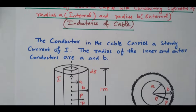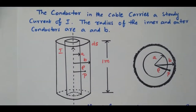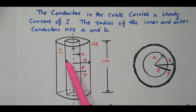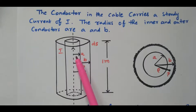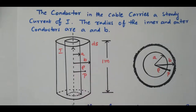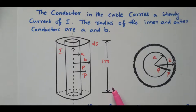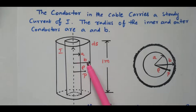Now we refer to the diagram. This is a coaxial cable where the axis is common for both inner and outer conductors. The inner conductor has radius A meters and the outer conductor has radius B meters. For calculation purposes, we consider one point P located between A and B — greater than A and less than B.